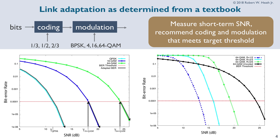On the right plot, you see 64-QAM with three different code rates. When you have error control coding, changing the code rate changes the SNR threshold. You could have various modulations and various code rates, and depending on the SNR, you could pick the one that's closest — giving you the highest throughput or spectral efficiency.